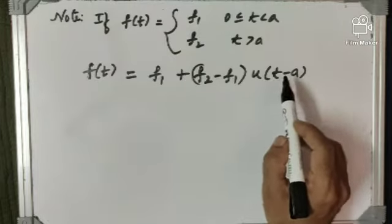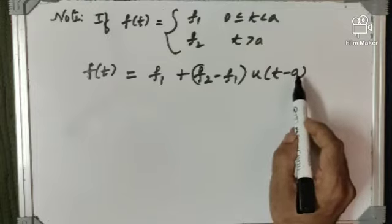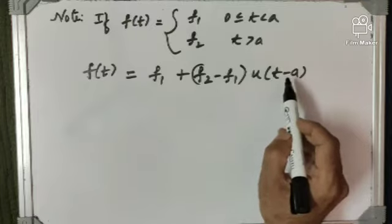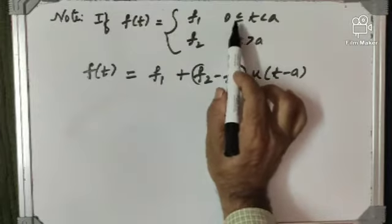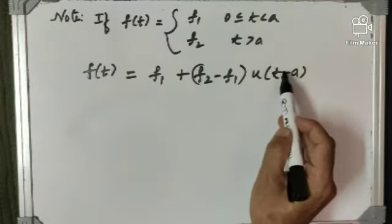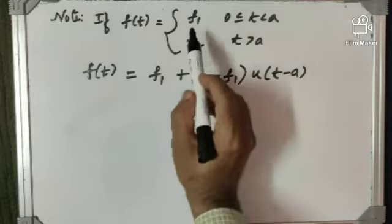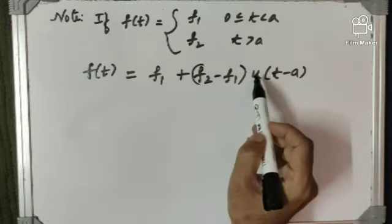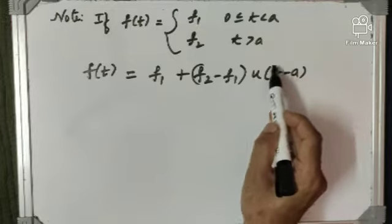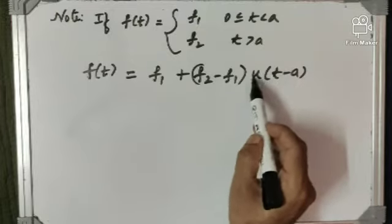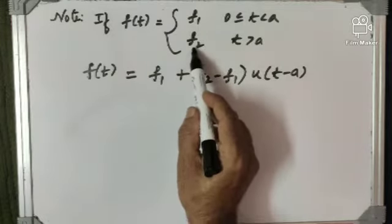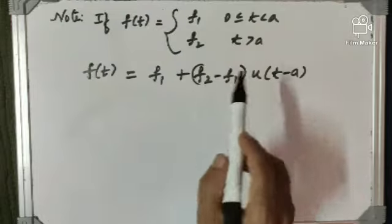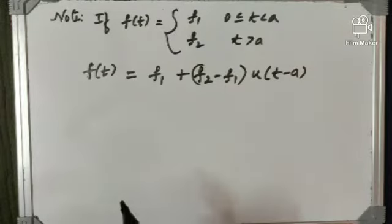The reason is u of t minus a is 0 whenever t is less than a, and it is 1 whenever t is greater than a. So if it is 0, meaning when 0 is less than or equal to t less than a, then 0 into anything is 0, and you will find f1. If t is greater than a, this value will be 1, so f1 plus f2 minus f1 — the f1's cancel — and you will find f2. This is the way we can express the function in terms of unit step function.